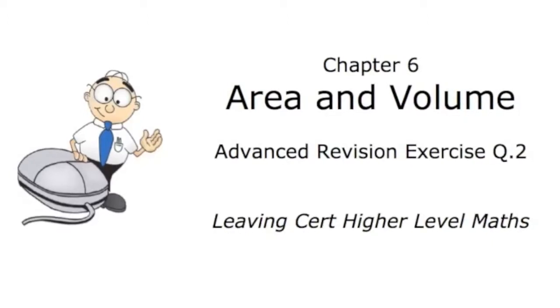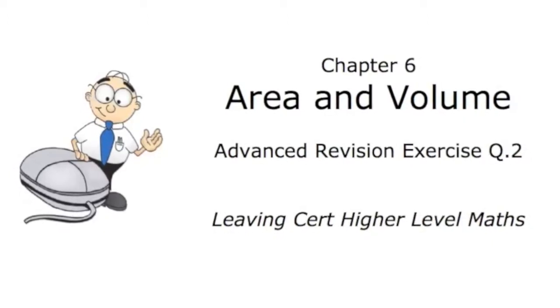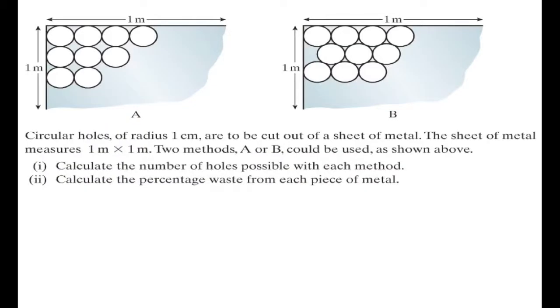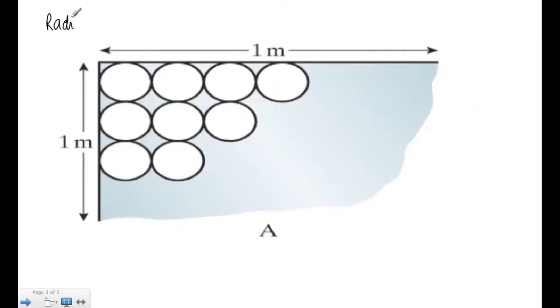Chapter 6, Area and Volume, Advanced Revision Exercise, Question 2. Circular holes of radius one centimeter are to be cut from a sheet of metal. The sheet of metal measures one meter by one meter. There's two methods A or B could be used as shown above. I will calculate the number of holes possible with each method. We'll consider method A first.